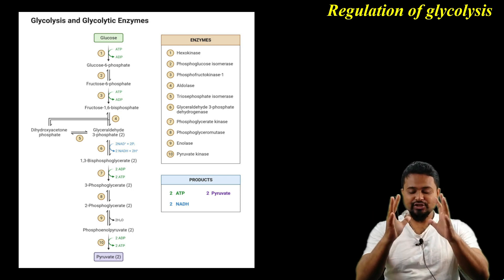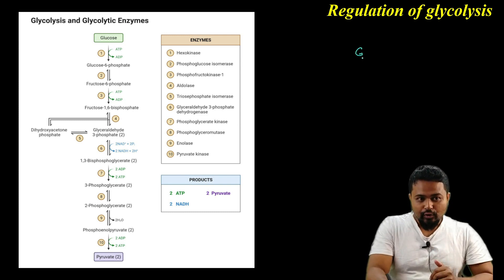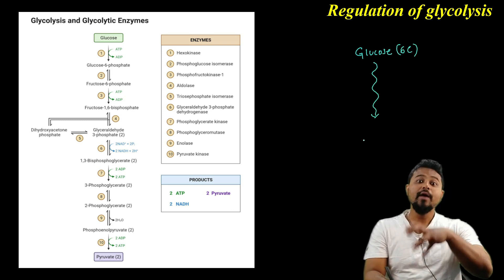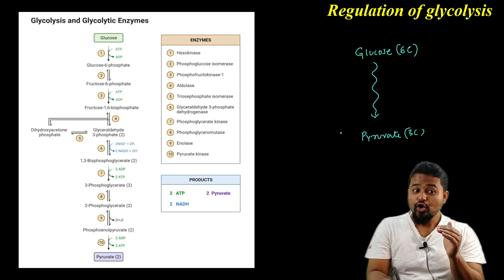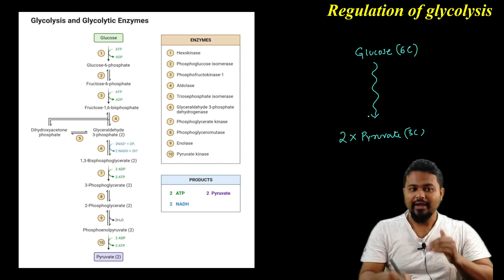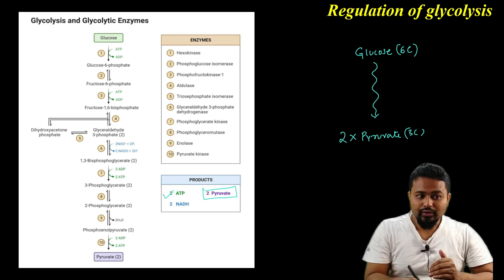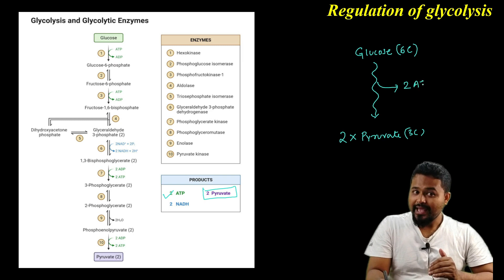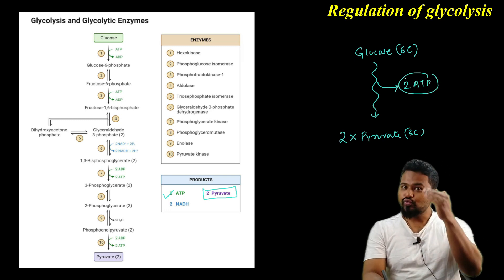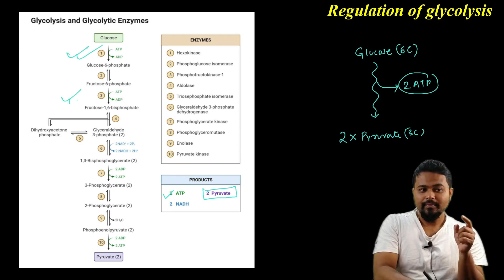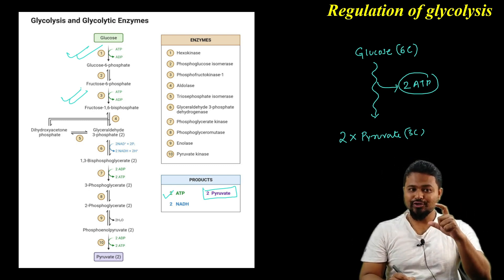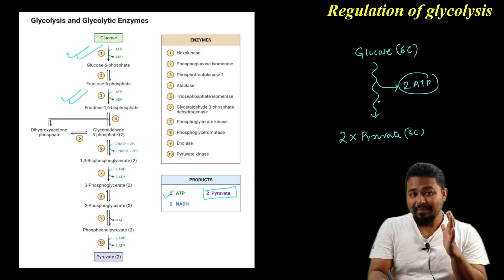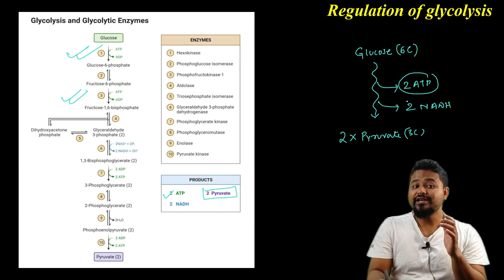What are the products of glycolysis? From one glucose molecule, which is a 6-carbon compound, it breaks down into pyruvate, a 3-carbon compound. We get two pyruvate molecules. And what else do we get? We get 2 ATP — actually 4 ATP are produced, but 2 ATP are used in the first and third steps during the energy investment phase.